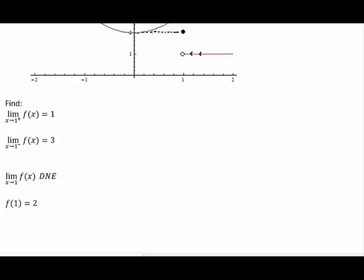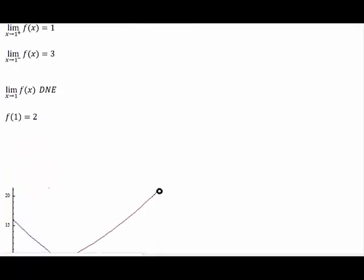Now, the function is taking the value of y equals 2 right here. So f of 1 is 2. Limit from the right is 1. Limit from the left is 3. But then the limit, since there's not a unique limit, does not exist. So that is that.